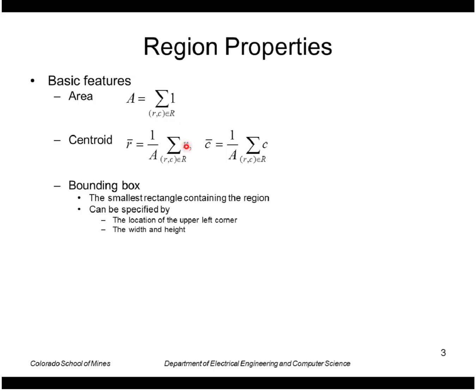Centroid is the average row column or row number and column value. And bounding box is the smallest rectangle containing the region which can be specified by the location of the upper left corner and its width and height.